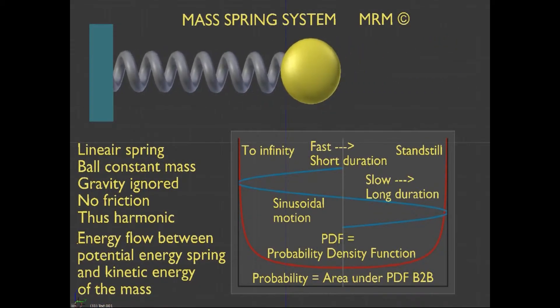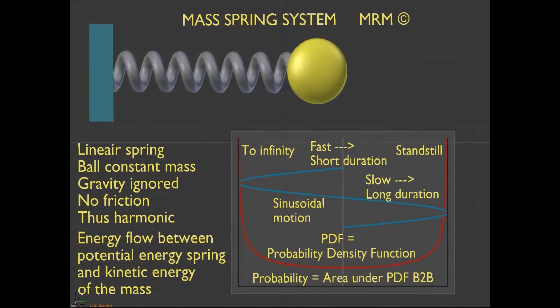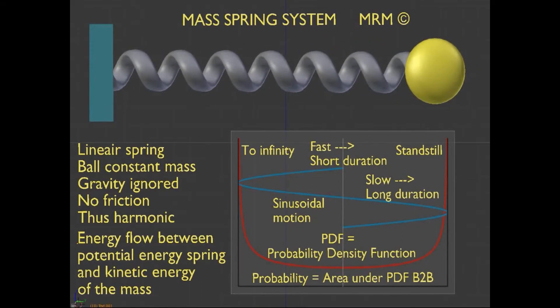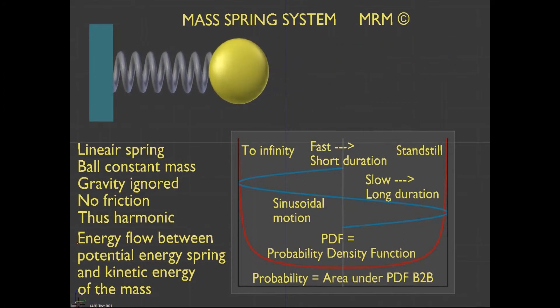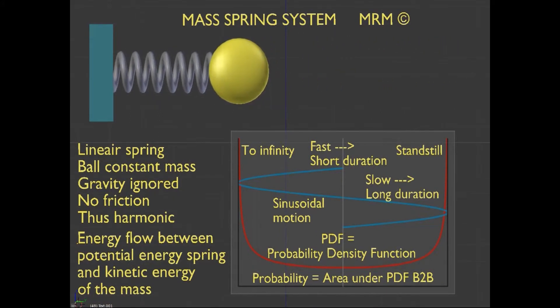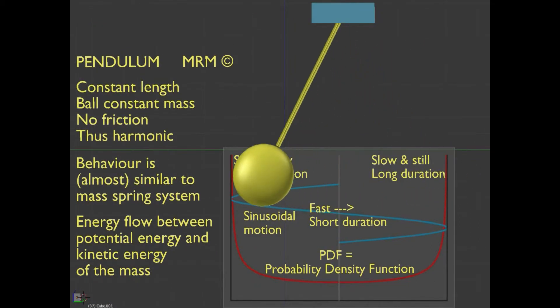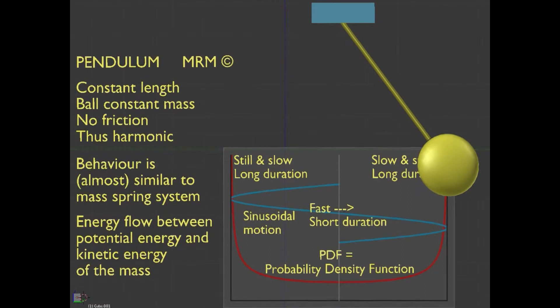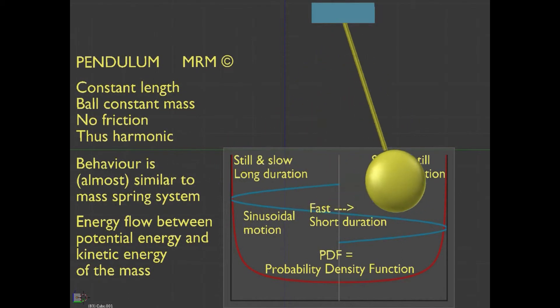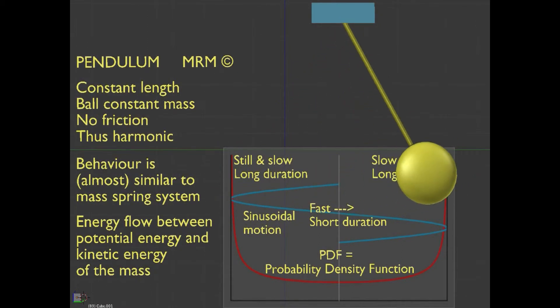A harmonic mass-spring system describes a sinusoidal motion in time. Also, its velocity and accelerations are sinusoidal. Its velocity is maximum in the middle and zero in extreme positions. Therefore, it will be relatively short in the middle and relatively long near the standstill positions. With small angles and displacements, a pendulum has the same PDF as the mass-spring system. In the standstills, the PDF goes to infinity. In the vertical position, the PDF is equal to 1 divided by pi.